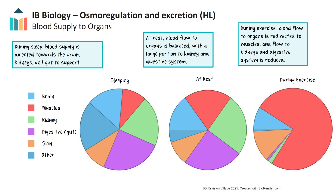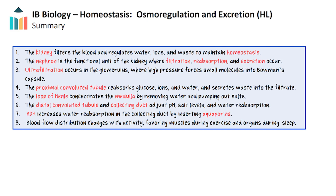Together, these processes — from nephron function to hormonal control and shifting blood flow — work continuously to keep the body in balance. We've now explored how the kidney and nephron work together with hormonal signals and blood flow adjustments to maintain internal balance. A summary of the content covered in this video is given here.